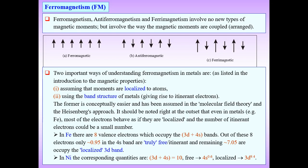In ferromagnetic materials, the electron magnetic moments are all aligned in the same direction. Notice also that the magnitude of the moments is also the same. Due to this phenomenon, ferromagnetic materials arise with all moments parallel and equal in magnitude.